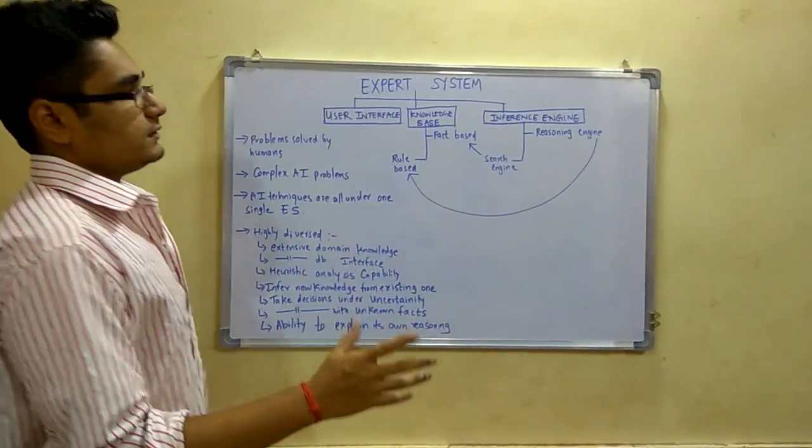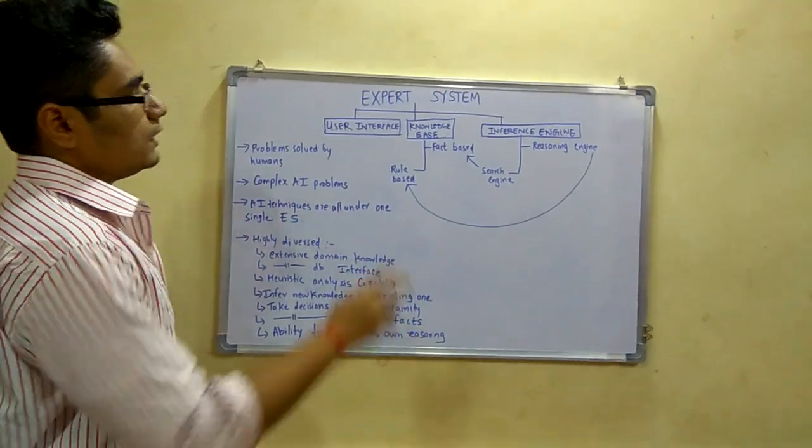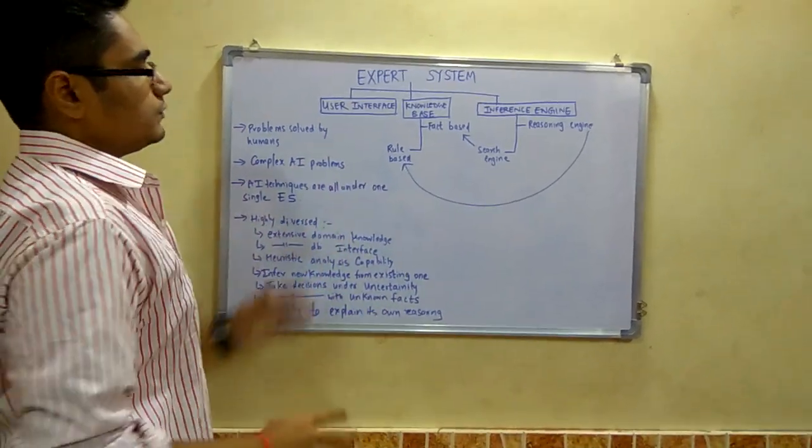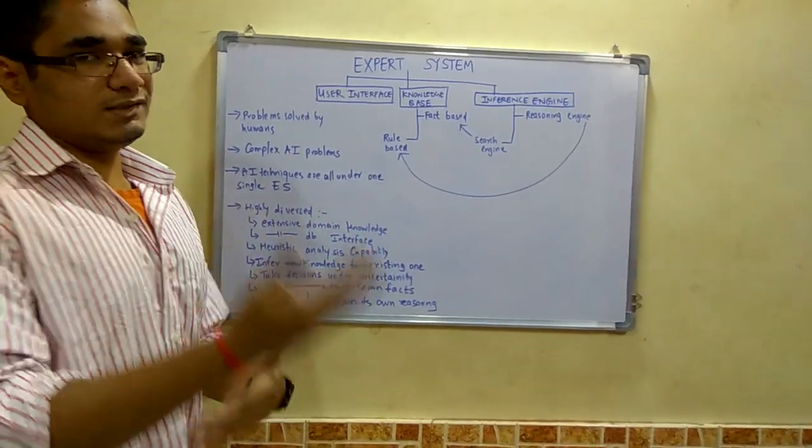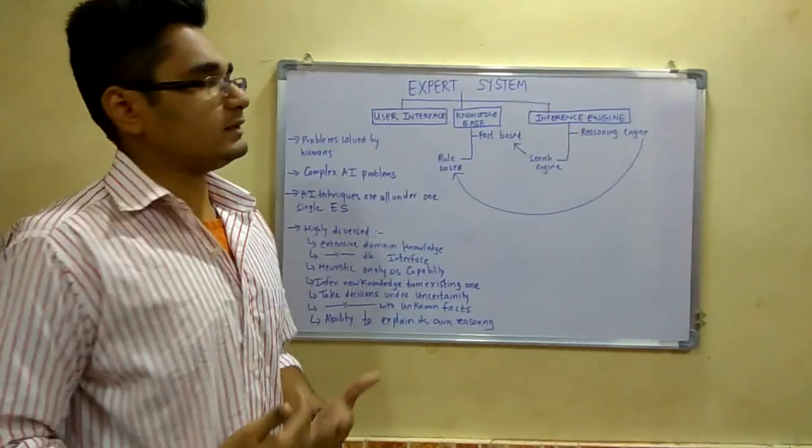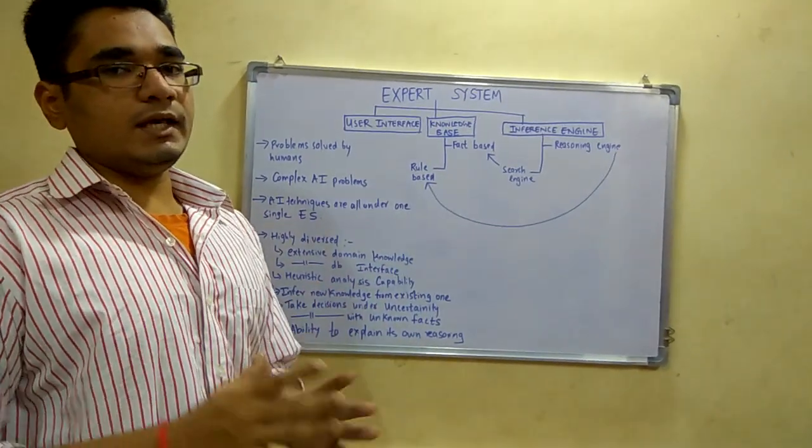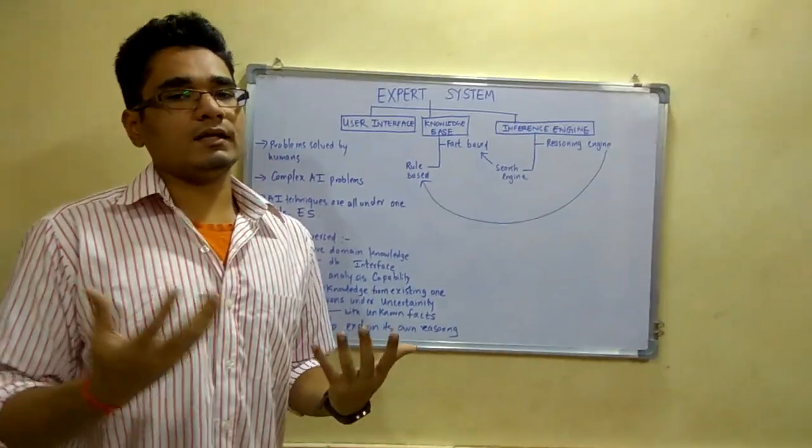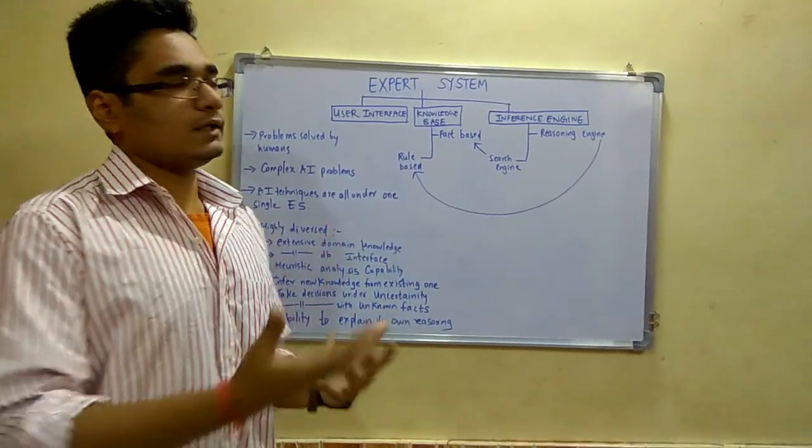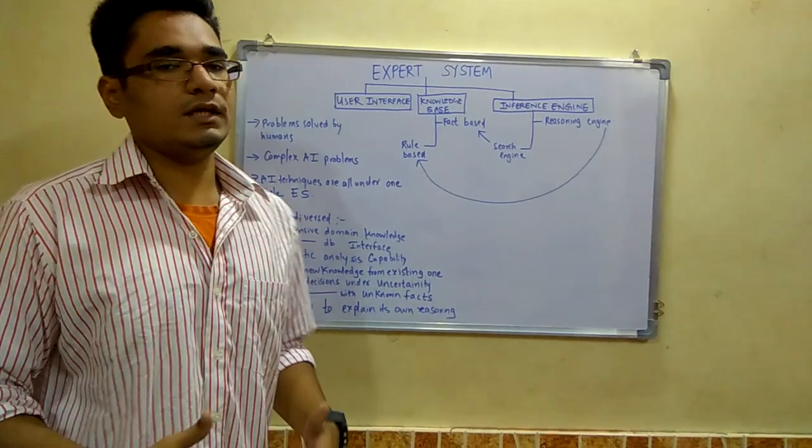This expert system is basically classified into three main types. First is the user interface where the user is interacting with the artificial intelligence agent. Second is the knowledge base where the AI agent can get the experience and information about certain kinds of actions which it does.